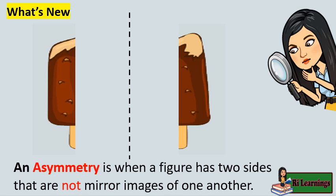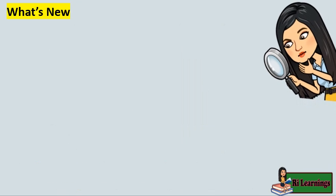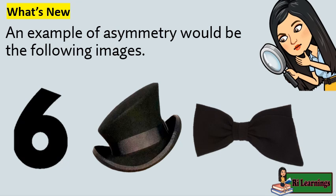A figure is said to be asymmetric, or not symmetrical. That means that an asymmetric object cannot be divided into identical halves. An example of asymmetry would be the following images. If we were to draw an imaginary line in the middle of it, we could not divide it into two equal parts.